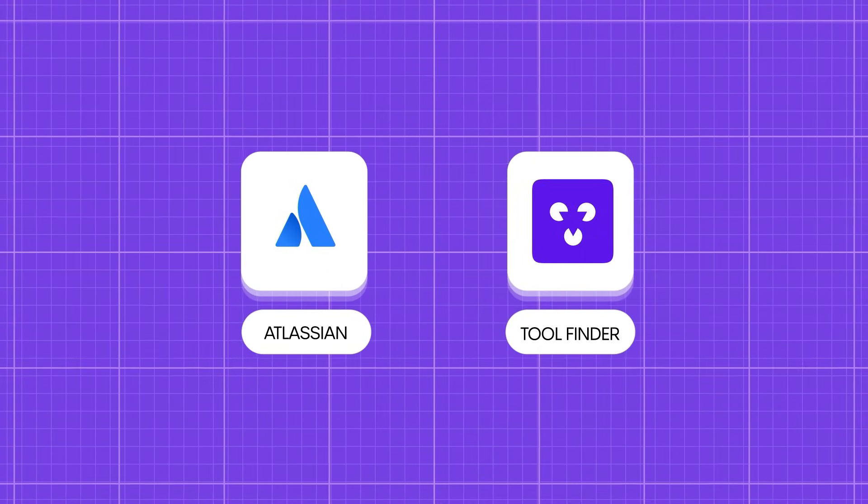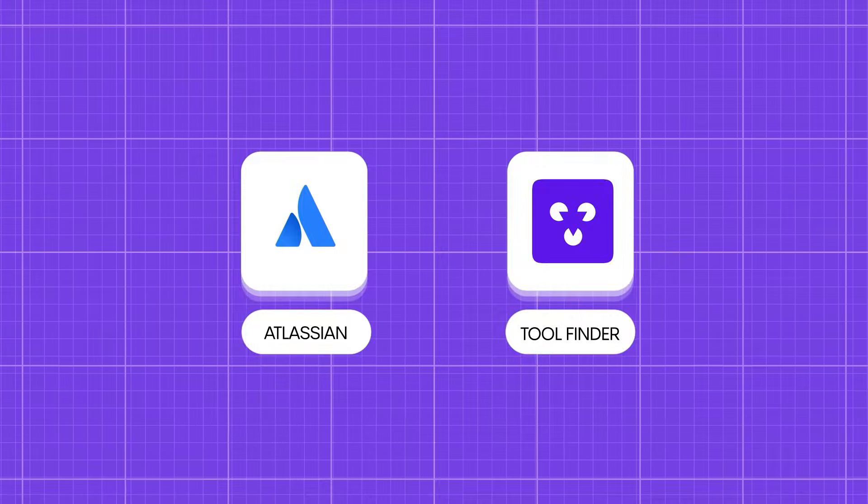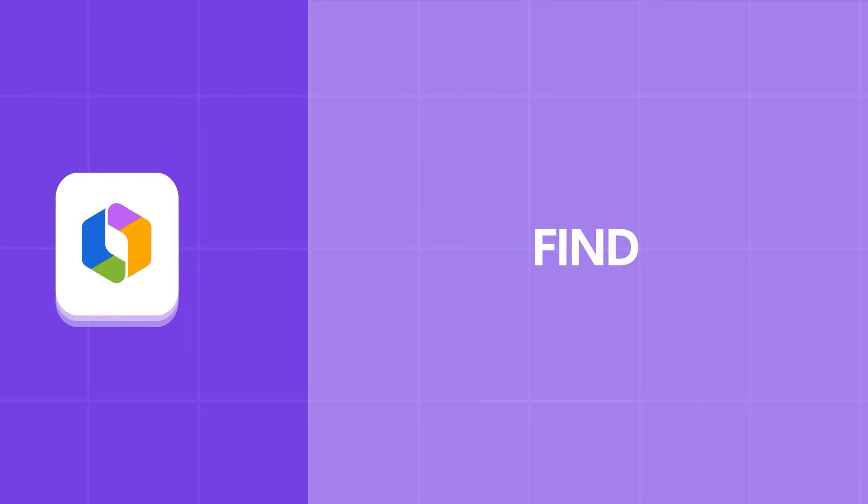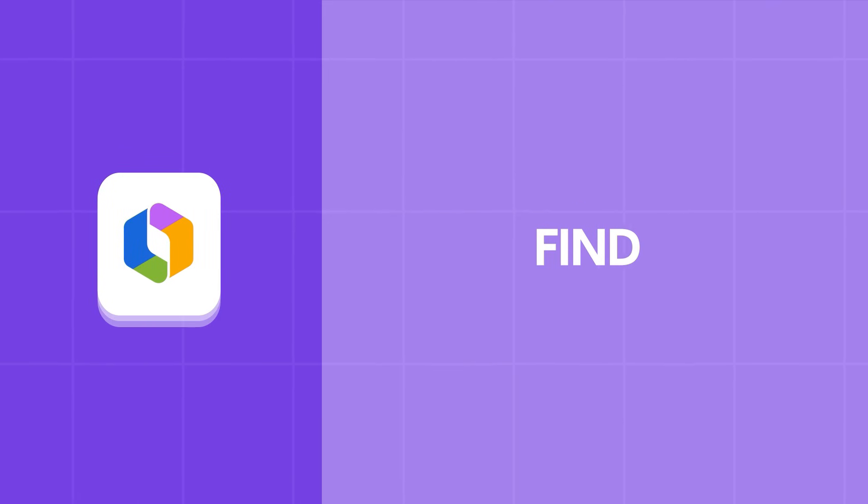Today's video is a collaboration between Atlassian and Toolfinder — you can check out Confluence below and unlock the powers of Rovo AI today. The best place to start is finding and understanding. Think of Rovo as your AI teammate, and our objective for this section is to help you understand how you can use Rovo to catch up fast and understand information in Confluence.